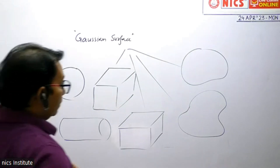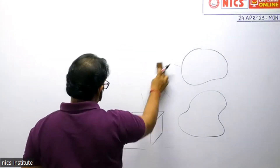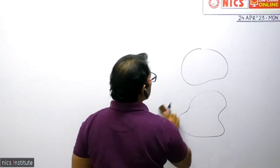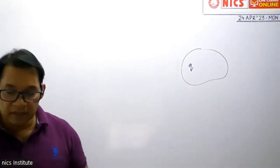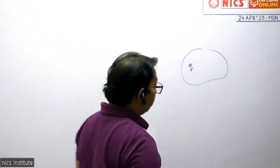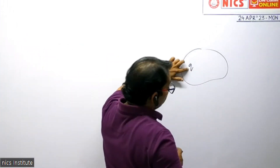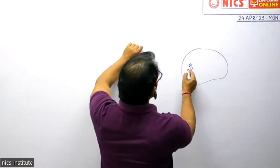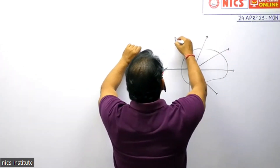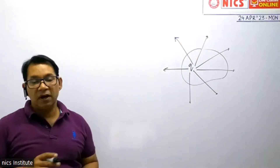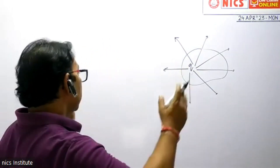So if we assume some irregular Gaussian surface and we place some charge inside it — suppose there is a Gaussian surface and I place a charge inside this. We know that every charge has electric field lines starting from it. By default, we take a positive charge. So electric field lines are originating from a positive charge and they are spreading radially outward.